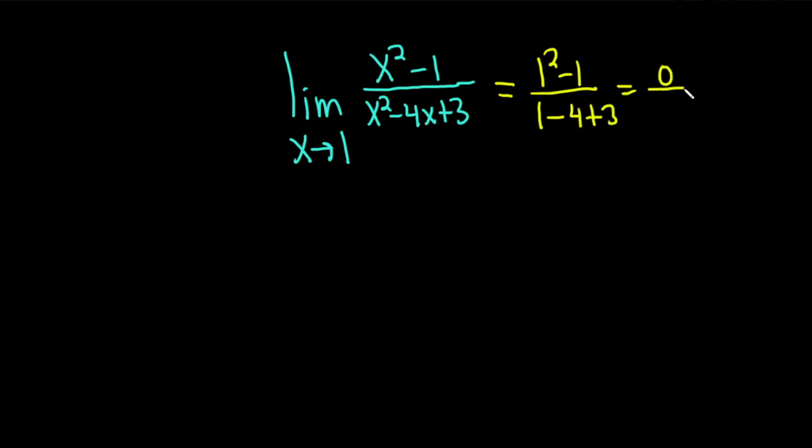This ends up being 0 over, and then let's see, 1 minus 4 is negative 3, negative 3 plus 3 is 0. So you get 0 over 0, so it doesn't work. Fail.